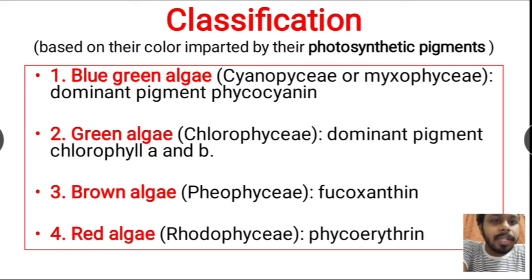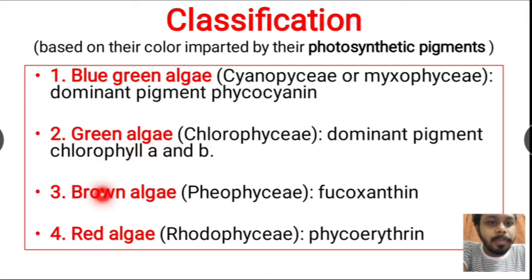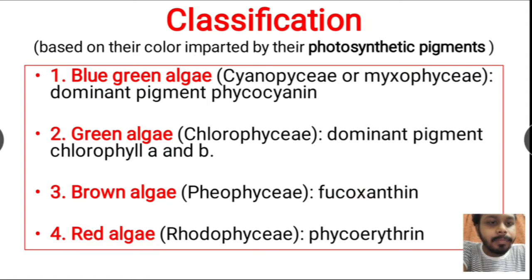Blue-green algae have the dominant pigment phycocyanin, which gives them their blue-green color. Green algae are the chlorophyceae, whose dominant pigments are chlorophyll a and chlorophyll b. Brown algae are the phaeophyceae, and red algae have dominant pigments phycoerythrin and phycocyanin, which give them their red color.